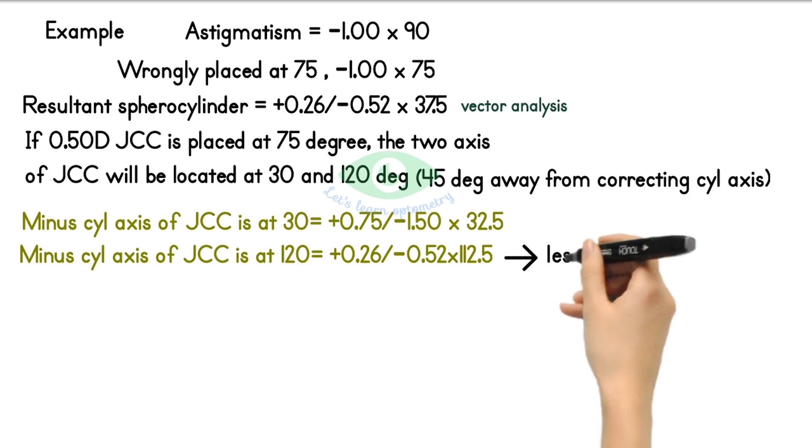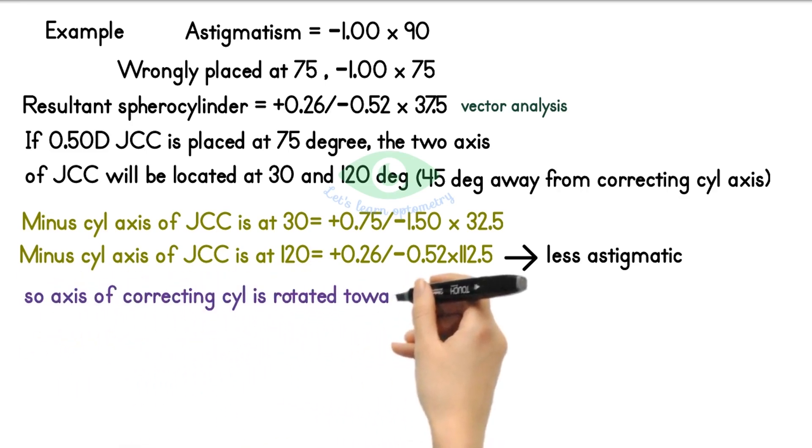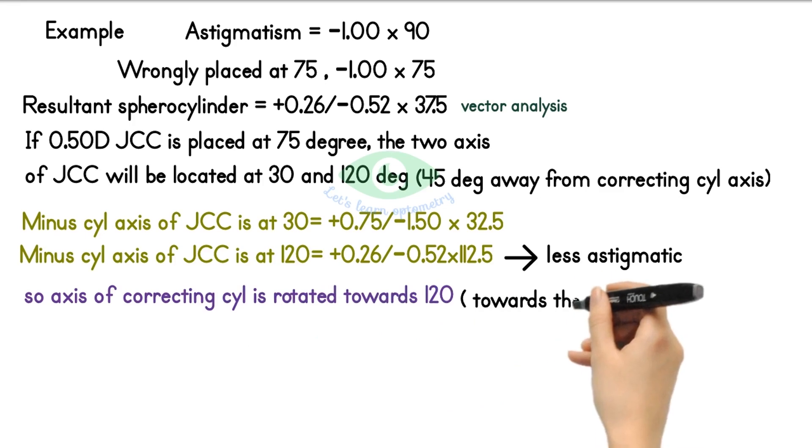The latter orientation is less astigmatic than the former one. So the patient will prefer this position when the lens is at 120 degrees. So we rotate the axis of the correcting cylindrical lens towards 120, that is towards the true axis, that is 90 degrees.